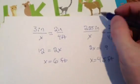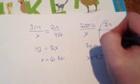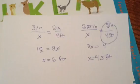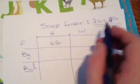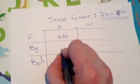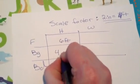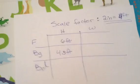So I'm going to keep reusing this scale factor, two inches for every four feet. And again, there's that scale factor, two inches to four feet. So my background is going to have to be 4.5 feet in reality.